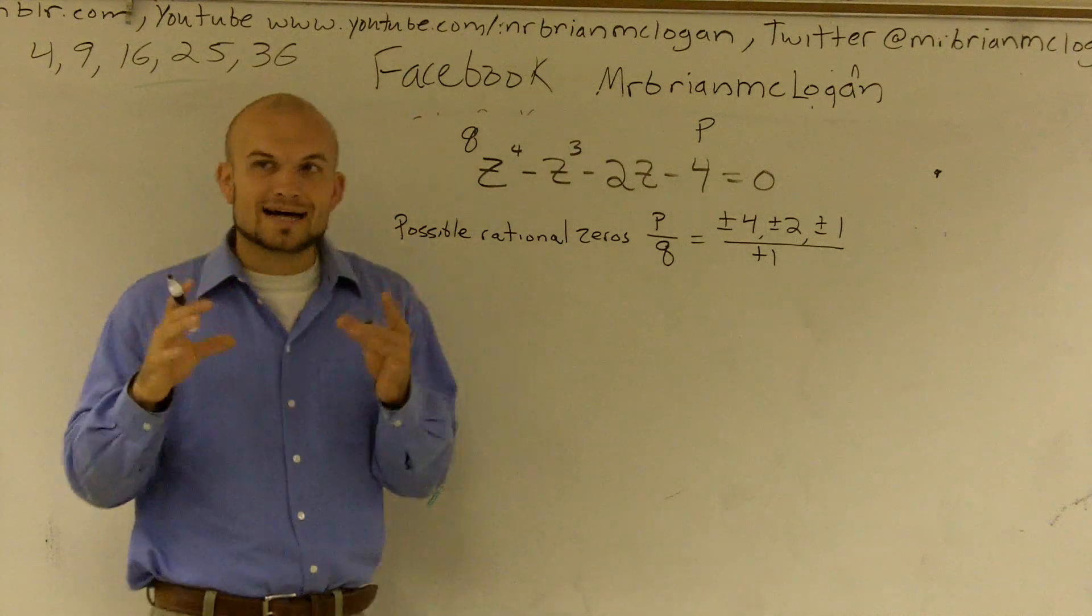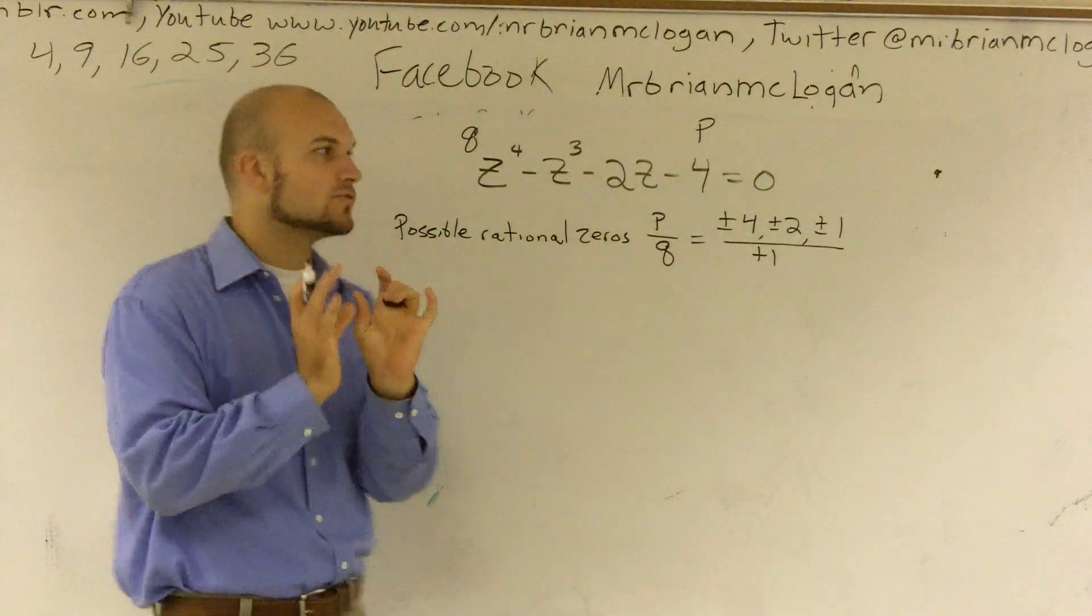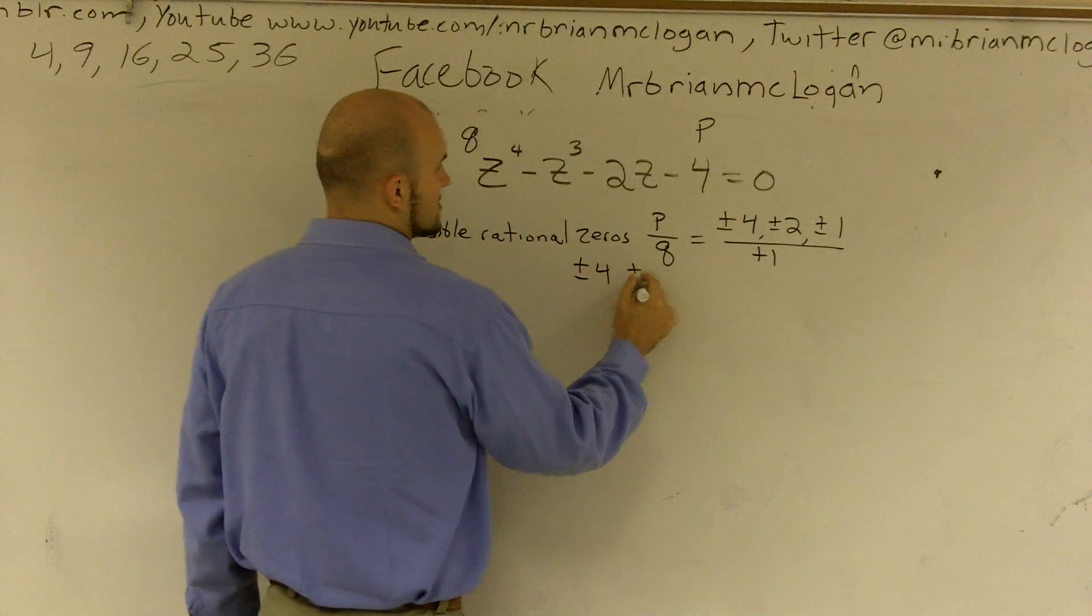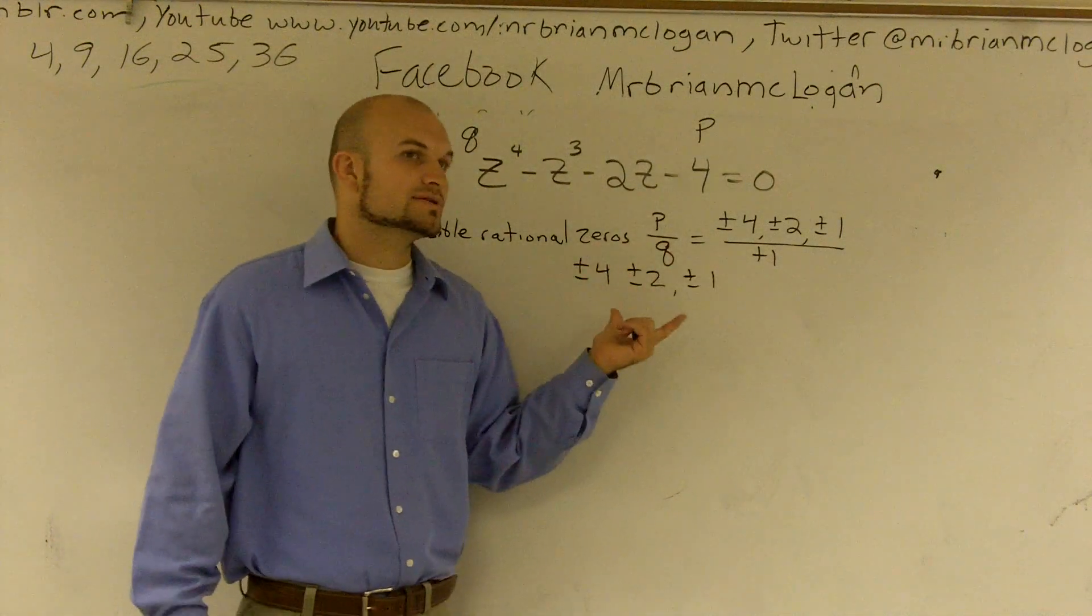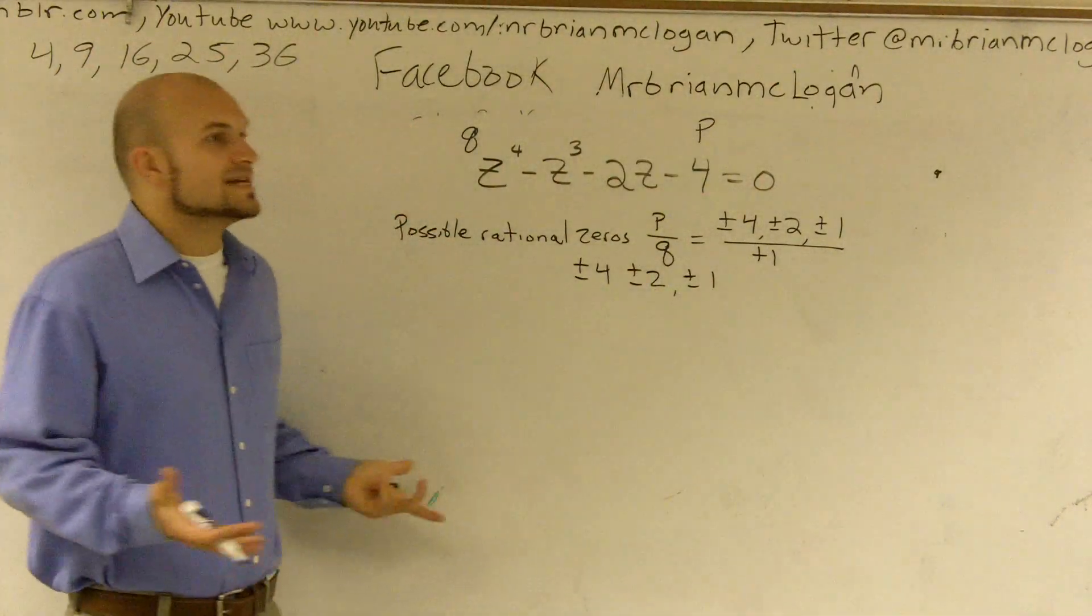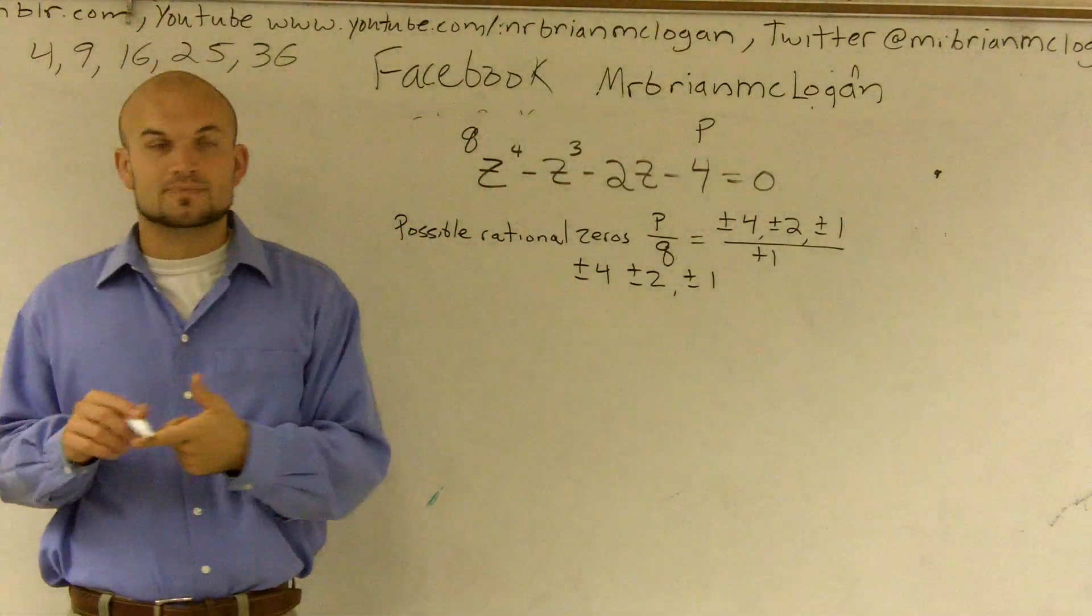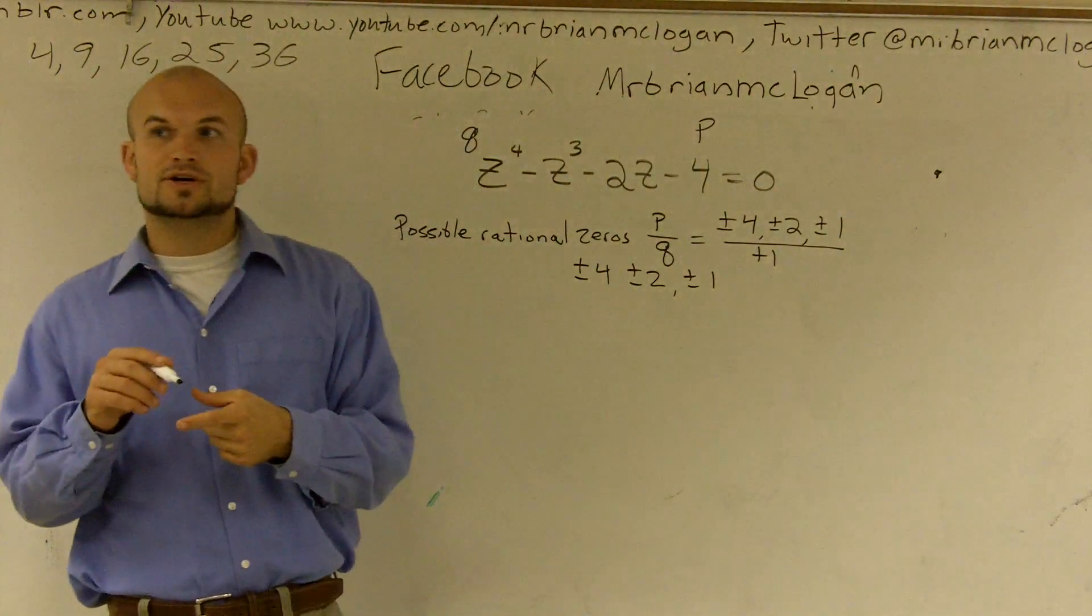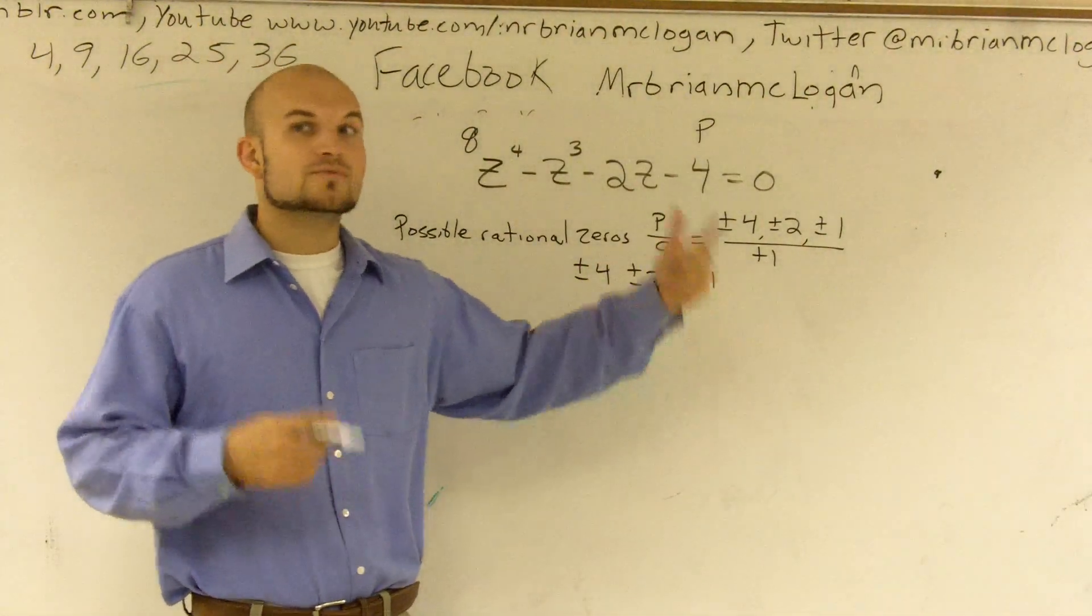Therefore, all the possible rational zeros are going to be plus or minus 4, plus or minus 2, and plus or minus 1. These are all my possible numbers. I don't know if any of these could work, none of these could work, or some of these could work. The easiest way we can test these out is we can use synthetic division or evaluation. If we do synthetic division and we get a remainder of 0, we know it's a factor. If we do evaluation and we get 0 at our end, we know it's also a factor.